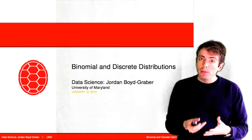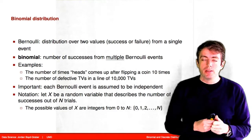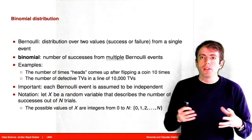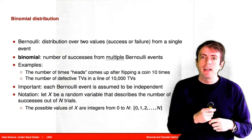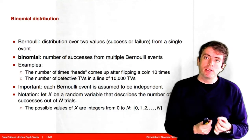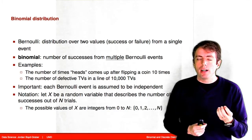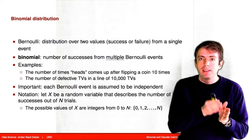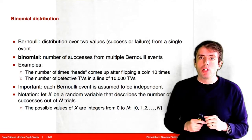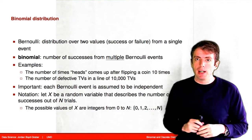So the binomial distribution, like the Bernoulli distribution, is a distribution over some process that has successes and failures. But instead of just talking about one outcome, we're going to talk about several trials of the same process repeated over multiple times.